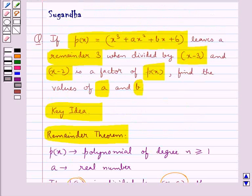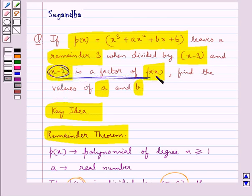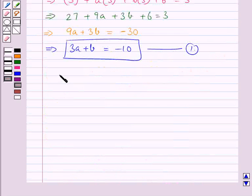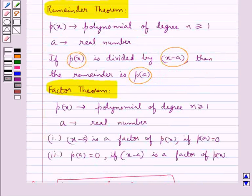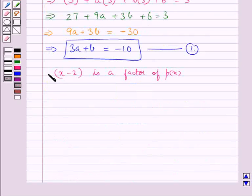Now the next condition given to us in the question is that x minus 2 is a factor of p(x). Recalling the factor theorem, if x minus a is a factor of p(x), then p(a) equals 0. Here x minus 2 is a factor of p(x), so this means p(2) is equal to 0.